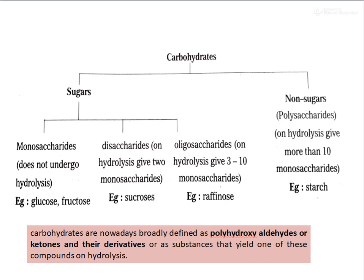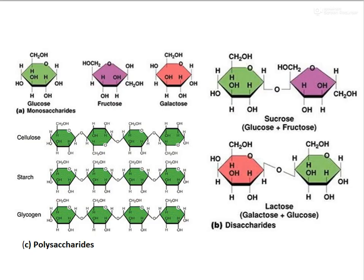In the second case, if you take a carbohydrate and do hydrolysis and get two monosaccharides, then you call it a disaccharide. For example, sucrose is made up of two moieties — a glucose moiety and a fructose moiety — joined together by a glycosidic bond. When I break down sucrose I will get glucose as well as fructose. In the case of lactose, it is made up of galactose as well as glucose. So if you break down a carbohydrate and get two sugars, you call it a disaccharide.